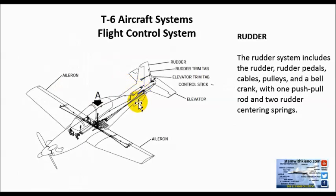The rudder system includes the rudder, rudder pedals, cables, pulleys, and a bell and crank system, with one push-pull rod and two rudder centering springs. So when you press the rudder, it returns back to a neutral position. The rudders in the front and rear cockpits are interconnected by tie rods.